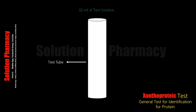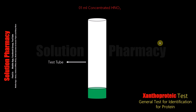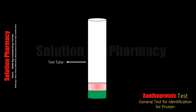First, take a test tube and add 2 ml of the test solution — that is, the solution of the sample in which we want to detect whether aromatic amino acid is present or not. Then add 1 ml of concentrated HNO3 (nitric acid) using a pipette. Mix the contents and boil in a water bath for about 2 minutes, then cool it.